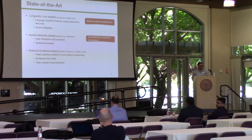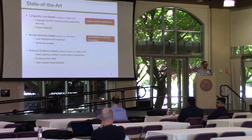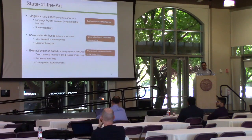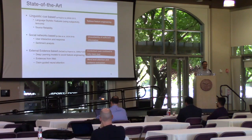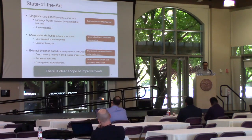Most of these methods use deep learning to avoid feature engineering. The recent state-of-the-art baseline from EMNLP uses claim text to guide attention and select salient words in the document. But there are certain gaps: contextual cues are confined to only the text of the news, while other aspects could also be considered. Additionally, attention is applied only at the word level, but words don't exist individually — they form sentences. Sentences are more important than words alone, so we want a hierarchical attention encoder to also select salient sentences, not only words. There is a clear scope for improvement.